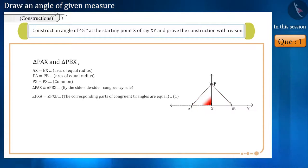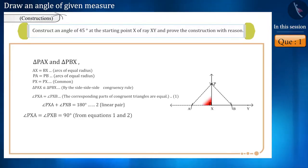Therefore, angle PXA is equal to angle PXB as corresponding parts of congruent triangles are equal. Let's call it equation 1. And angle PXA plus angle PXB is equal to 180 degrees because they are linear pairs. Let's name it as equation 2.